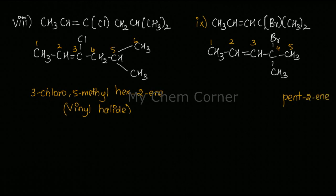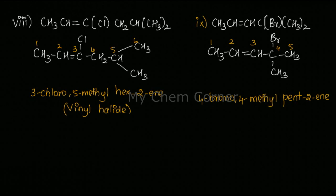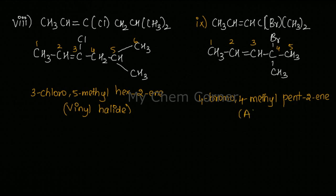At position four there is a bromo group, and at position four there is also a methyl group. In alphabetical order: 4-bromo-4-methylpent-2-ene. The double bond is between carbons two and three, and the adjacent carbon (carbon four) has the bromo group. Such compounds — where the halide is on the carbon adjacent to the double bond — are called allylic halides.